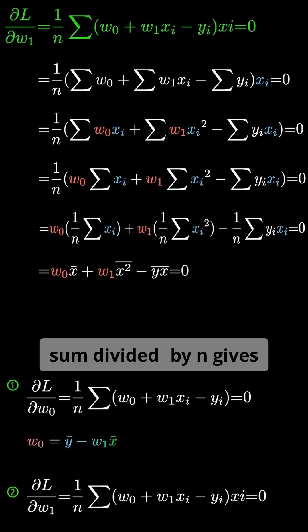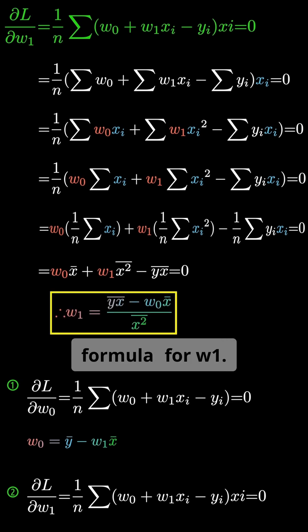The sum divided by n gives the averages again. Finally, we can express the simplified formula for w1.